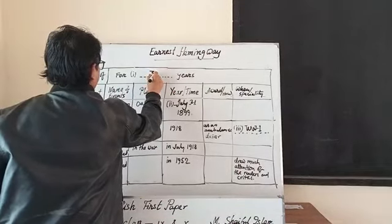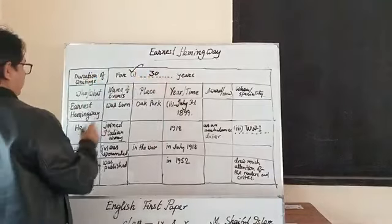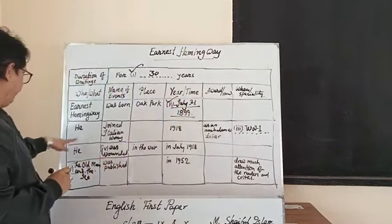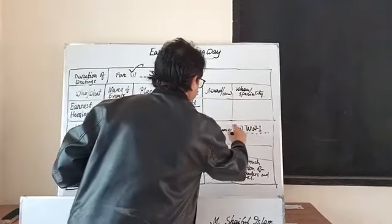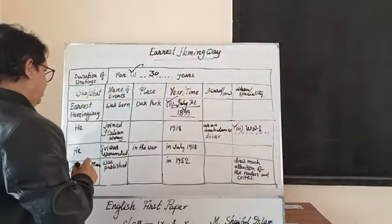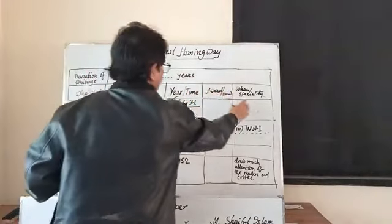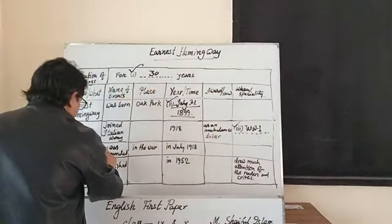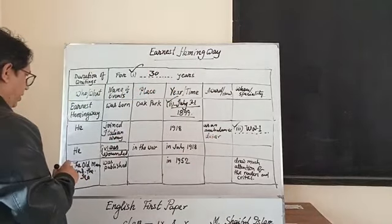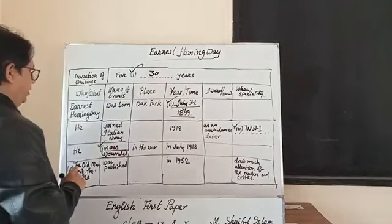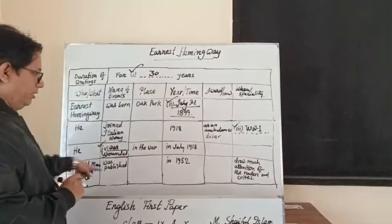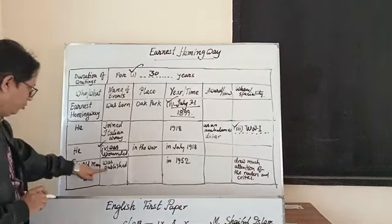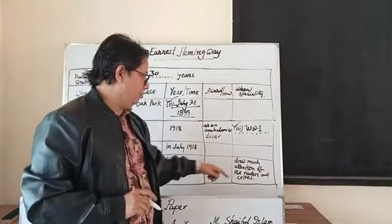So we have now got the direct connections and all the answers clearly. First: 30 years. Second: July 21, 1899. Third: World War I. Fourth: he was wounded. And question number five: The Old Man and the Sea was published in 1952 and drew mass attention.